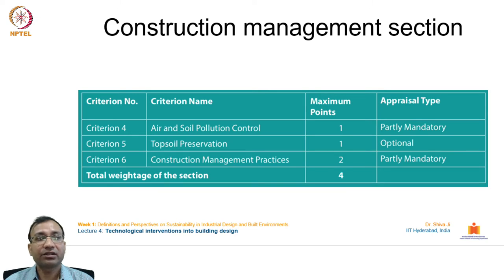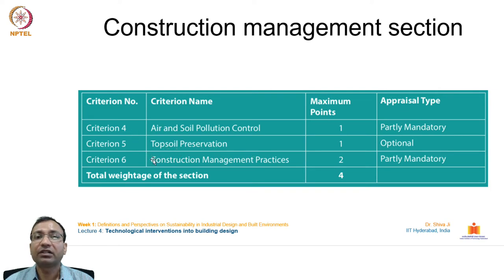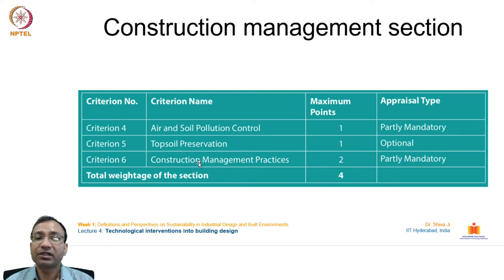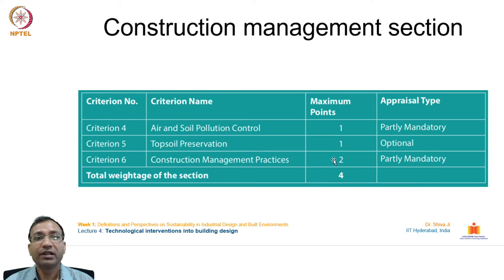The construction management section addresses pollution control — air, soil, and water pollution must be controlled, receiving 1 point. Topsoil preservation is also critical as construction activities degrade topsoil through debris, cement, oil, and grease, damaging the microbes and organisms it supports. The third criterion is responsible construction management practices for workers' welfare, receiving 2 points — totalling 4 points for the section.